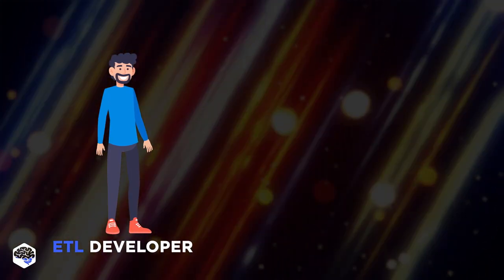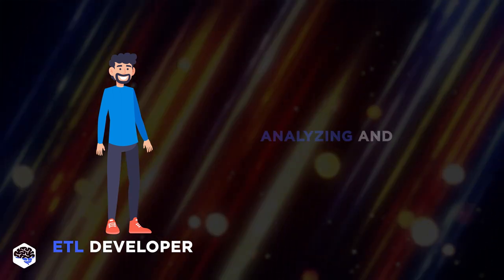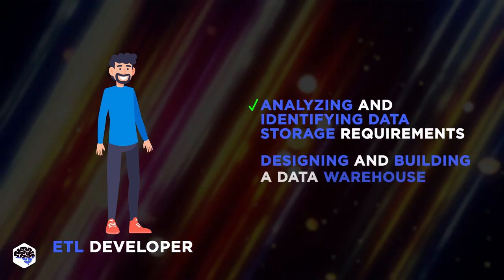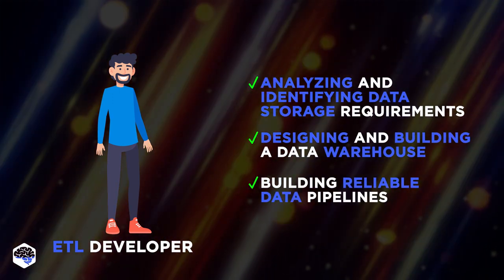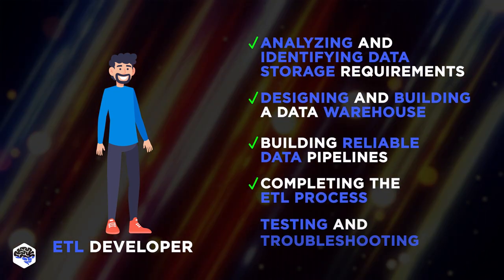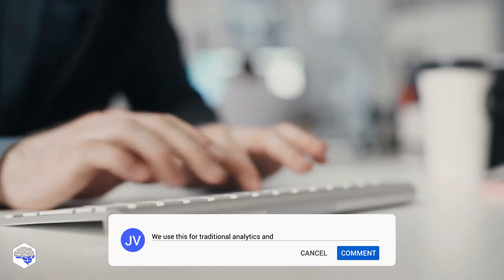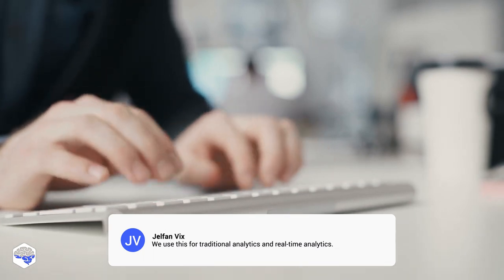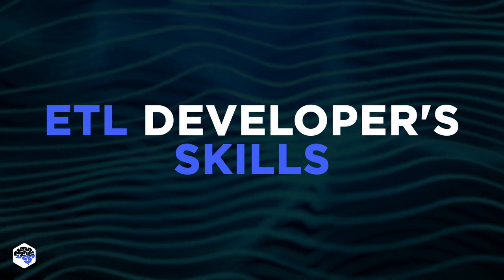The ETL developer job description consists of a range of duties, which primarily involve analyzing and identifying the company's data storage requirements, designing and building a data warehouse, building reliable data pipelines, completing the ETL process, testing and troubleshooting, and maintaining and debugging. Which do you think are the major areas of data pipeline use? Share your thoughts in the comments section.